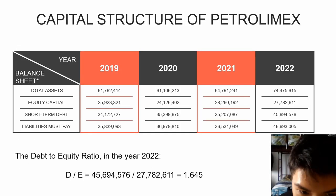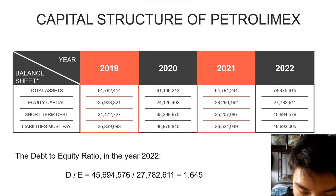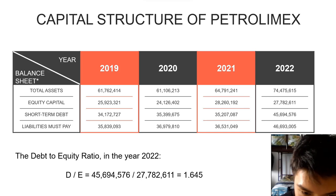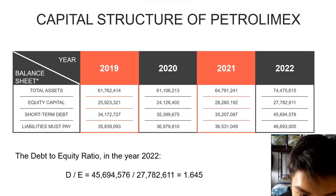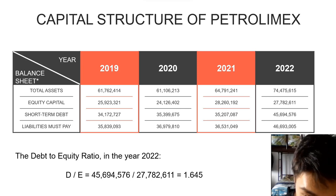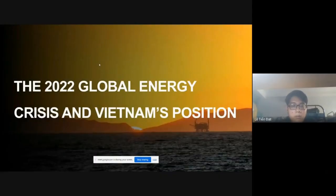Now let's talk about the capital structure of petroleum. We have the capital structure over the past four years. Considering the year 2022, we calculate the debt-to-equity ratio: taking debt of 45 million divided by equity of 27 million, we get a result of 1.645. This ratio is high, indicating that the company relies heavily on debt financing to fund its operations. If the company faces financial challenges such as declining revenues or rising interest rates, it might struggle to meet its debt obligations, risking financial distress or bankruptcy.